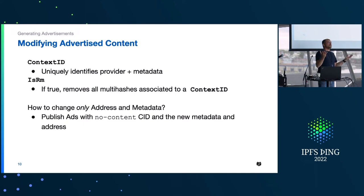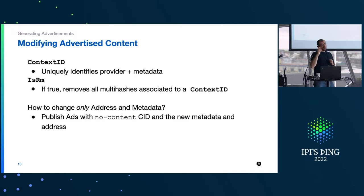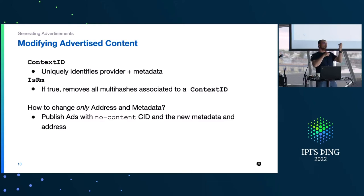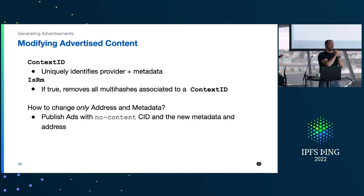How do we tell people we no longer have certain content, or what happens if our address changes? The advertisement structure supports two specific fields that allow you to modify advertised content. One is context ID and the other is a boolean field called 'is_removed.' Context ID is a unique identifier grouping multihashes together — if you want to remove a whole bunch of advertised multihashes, you don't need to re-advertise them all. You tag them with a context ID and say 'remove context ID X,' and all multihashes associated with that context ID are removed.